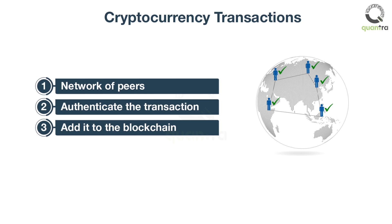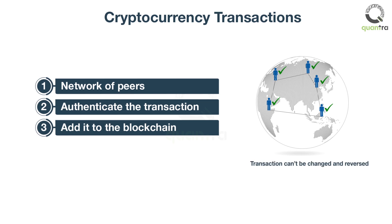As long as a transaction is unconfirmed by its peers, it is said to be pending and it can be forged. But once a transaction is confirmed, it is set in stone. It cannot be changed, it can't be reversed, and it becomes a part of the blockchain containing the records of all historical transactions of that currency.